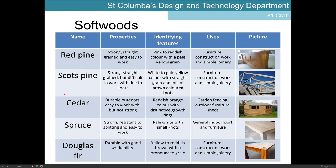Cedar is another example of softwood. It's very durable outdoors and easy to work with, but not overly strong. It has a reddish orange colour with distinctive rings — we spoke about looking at a tree stump and seeing the rings, and cedar tends to have very distinctive rings. It's often used in outdoor pursuits such as garden fencing, sheds, furniture, tables and benches because of its durability in outdoor environments.